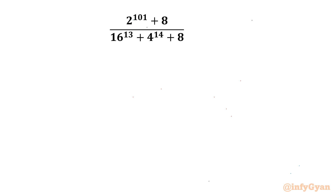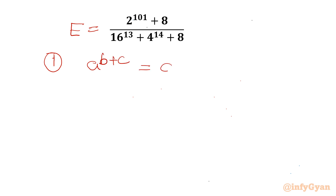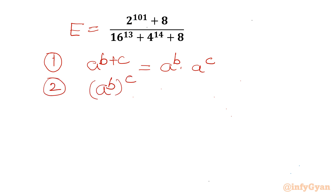Let's get started by considering the given expression equal to E. I will write two most powerful properties from exponents which I will use here. Property one: a power (b + c) equals a power b times a power c. Property two: a power b, whole power c, equals a power (b times c).